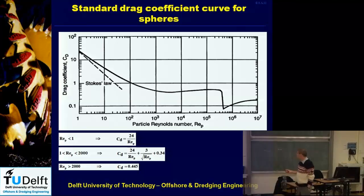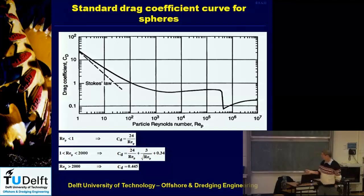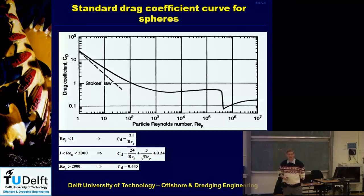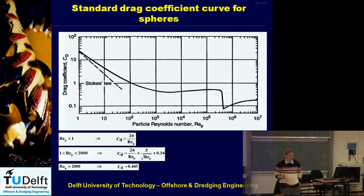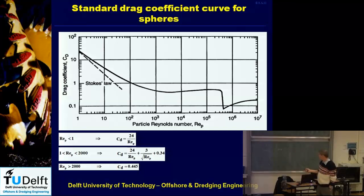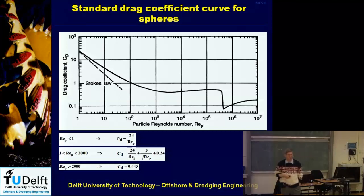For very small particles with small Reynolds numbers, there is a linear relation: Cd equals 24 divided by the Reynolds number. The smaller the Reynolds number, the bigger the Cd value — this is the viscous (laminar) flow regime. At very high Reynolds numbers, the Cd value is almost constant at about 0.445 because we have turbulent flow around the particle.